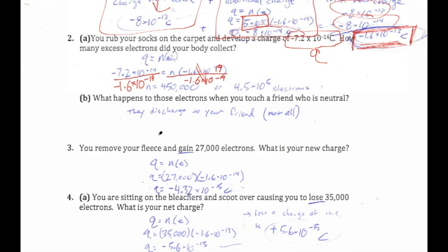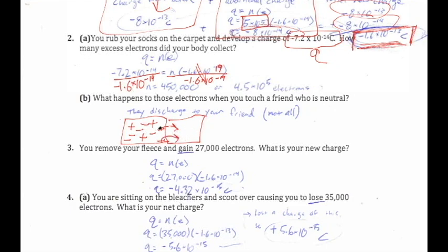What happens to those electrons when you touch a neutral friend? Some will discharge. Think of yourself having extra electrons — some neutralize your own protons, leaving a few excess. When you touch a neutral friend, some electrons jump off onto them, spreading out approximately half and half, similar to diffusion in biology.